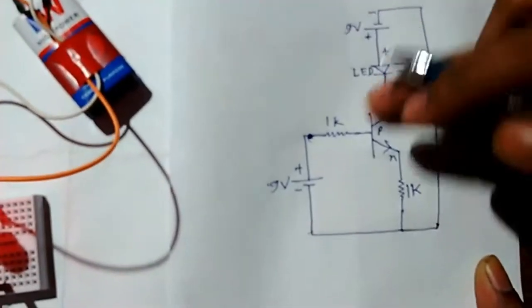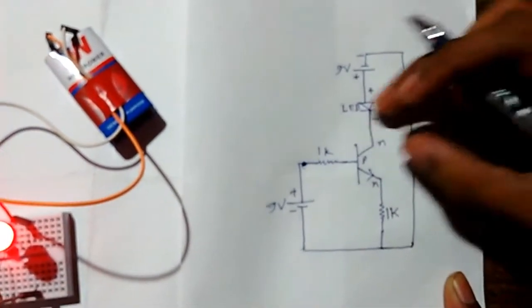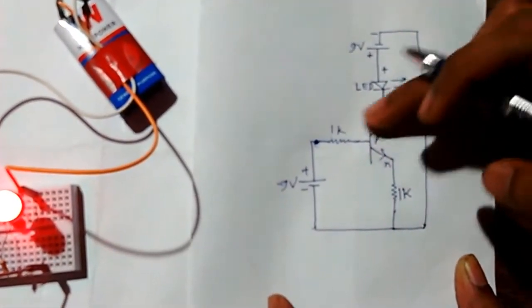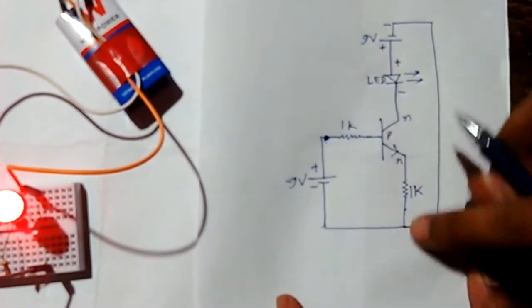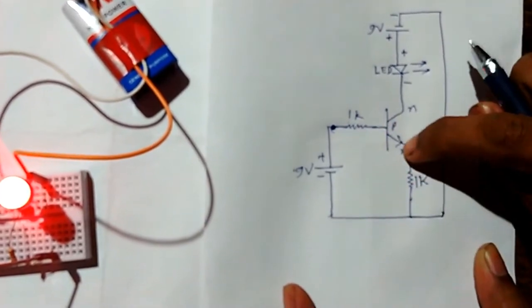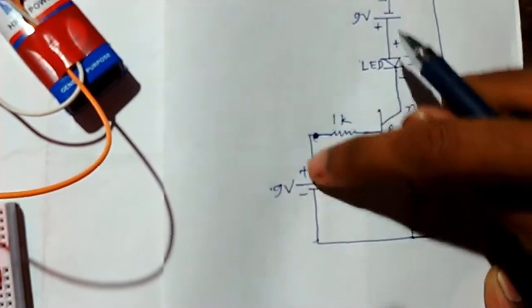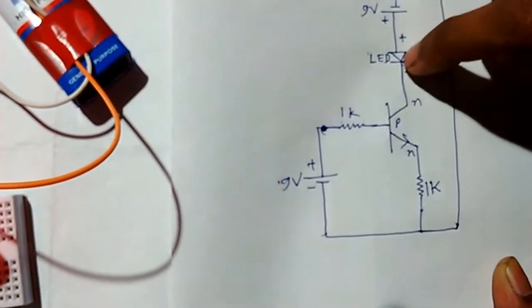You can use any type of NPN transistor. This transistor is connected in forward bias, that means the emitter is connected to ground, there is a base voltage here, and this LED is connected to the collector.